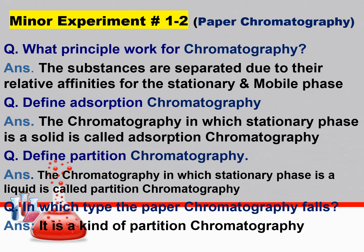What is partition chromatography? Partition chromatography is one in which the stationary phase is a liquid. Another question: in which type does paper chromatography fall? It is a partition chromatography, because in partition chromatography the stationary phase is a liquid. Here in paper chromatography, the water vapour present in the paper is liquid and acts as the stationary phase. So it is a partition chromatography.